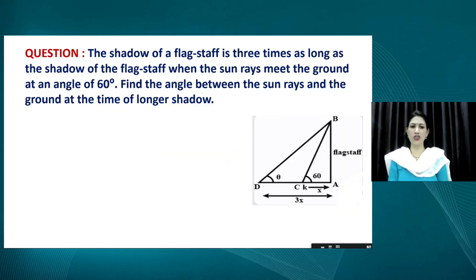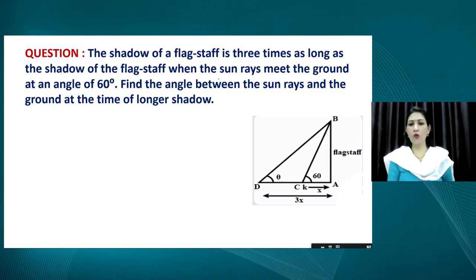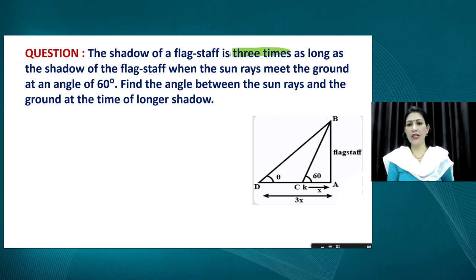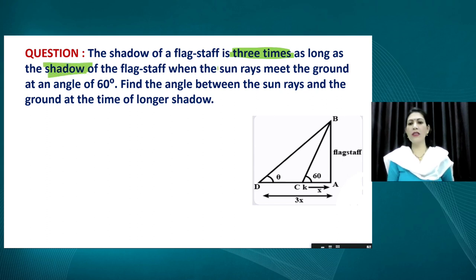There are various questions of this same type. In the next question, we are not given any specific numerical values — only a condition. The condition involves the shadow of a flag post. Let us read the statement first.